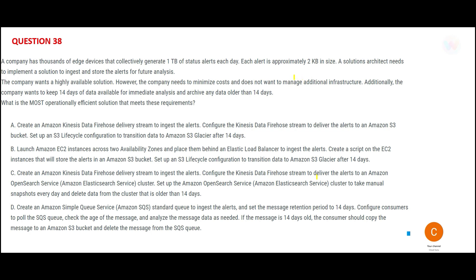The second question: the requirement is to ingest and store alerts for feature analysis. The alerts are real-time because they come through edge devices. Whenever we talk about real-time, we think about Kinesis — not SQS, not EC2 instances. Only options A and C have Kinesis, so we narrow it down to those two.